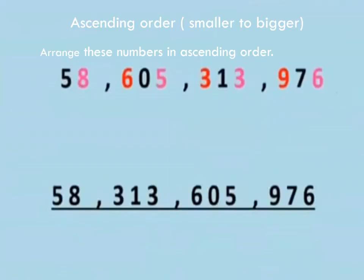So let's start to revise chapter number one. Our first topic is ascending order. Students, as you know, ascending order means smaller to bigger. In ascending order we arrange the numbers from smallest to greatest number.